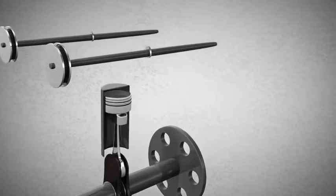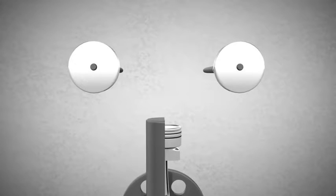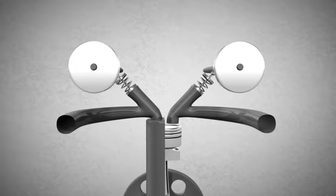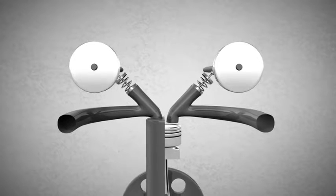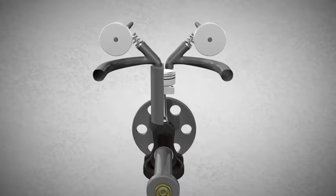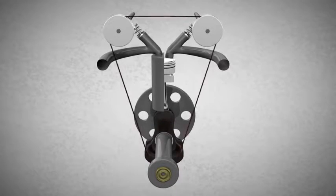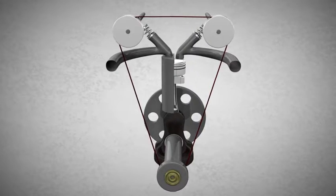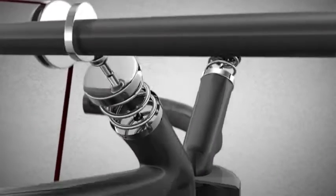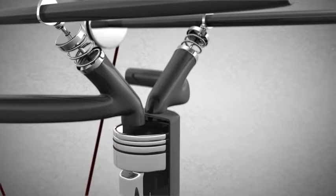Two camshafts are installed on top of the cylinder, which control the intake and exhaust valve. The camshaft is connected to the crankshaft through a belt. More often than not, the crankshaft to camshaft gear ratio is 2 to 1, which means that for every two revolutions of the crankshaft, the camshaft will rotate only once.